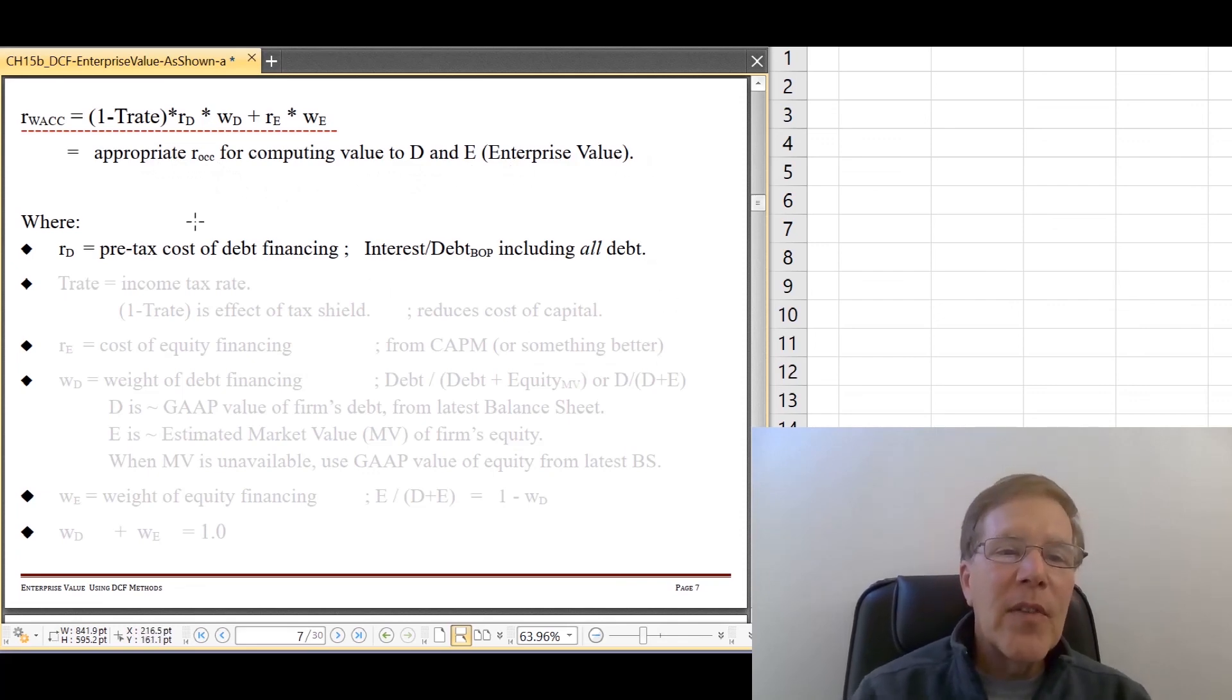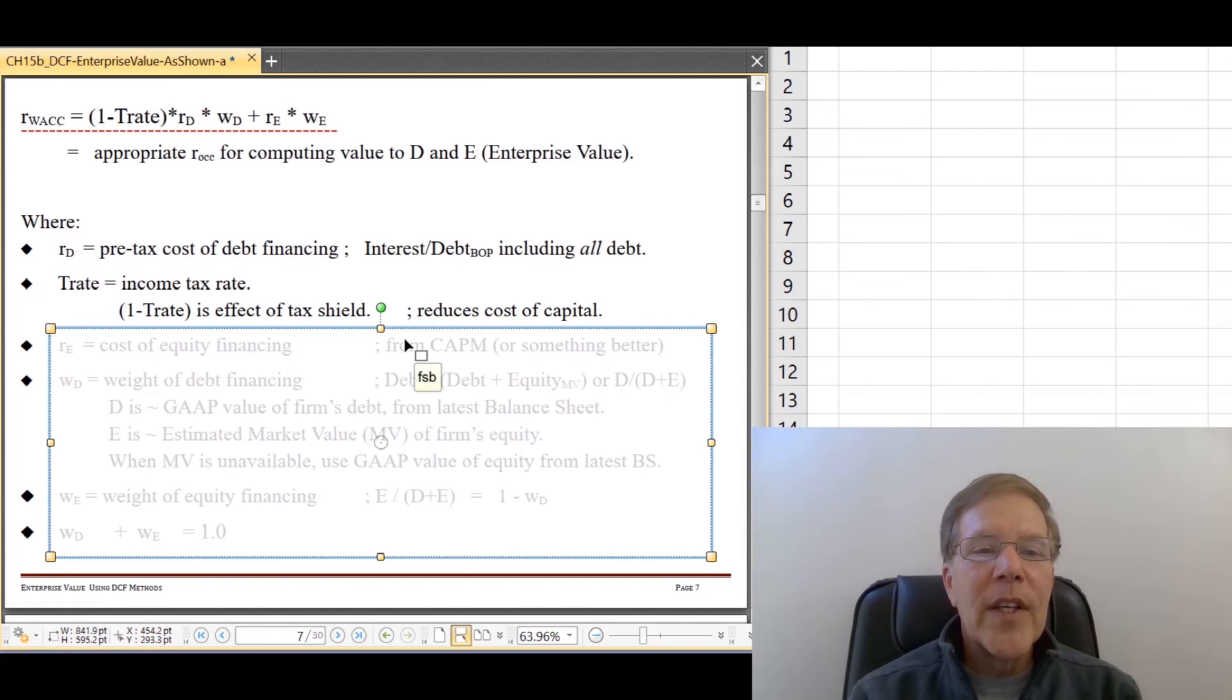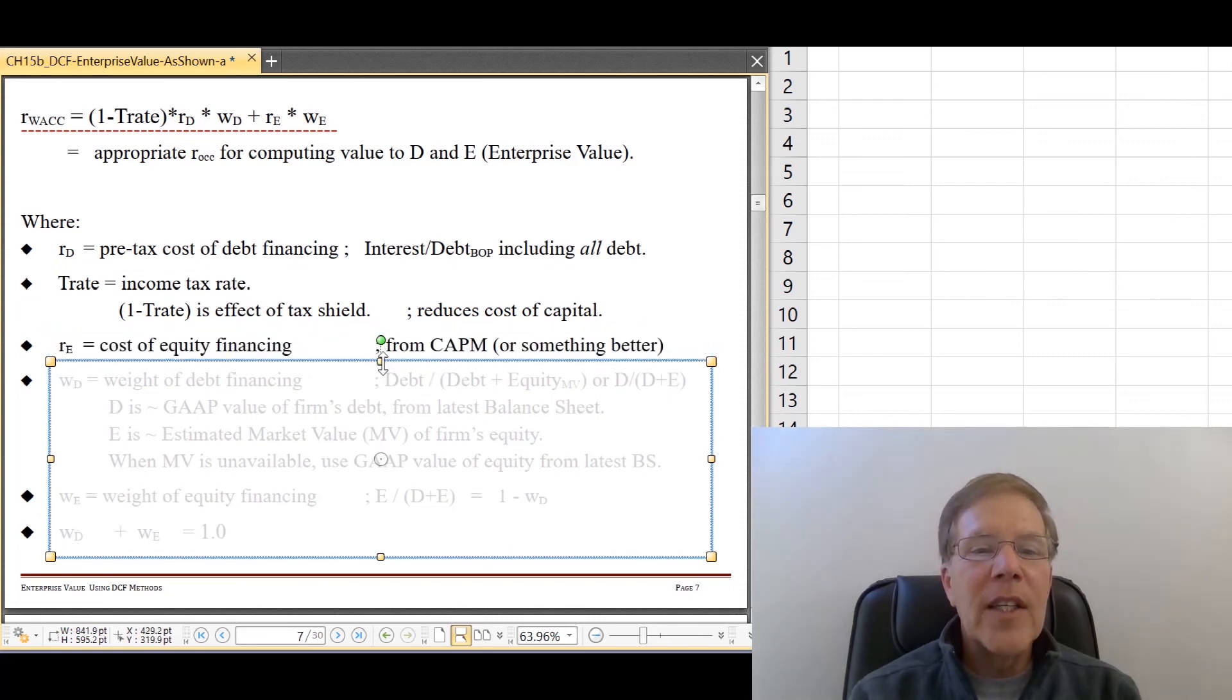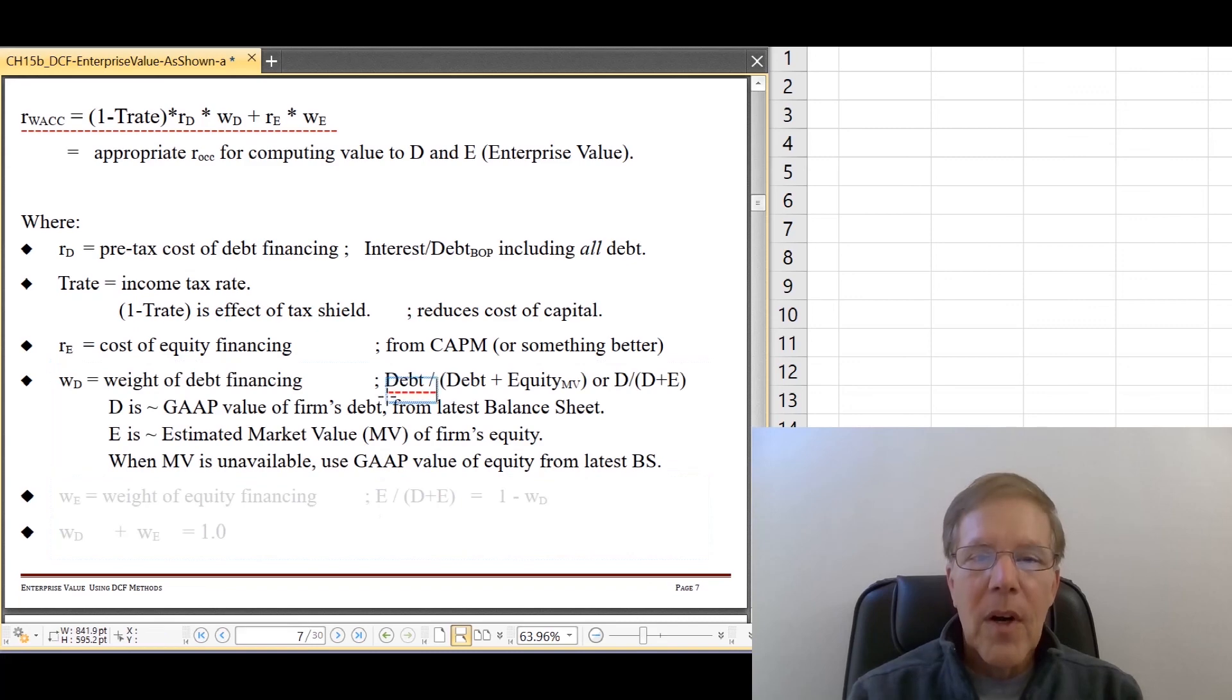And just to remind ourselves of the terms in here, so RD is that pre-tax cost of debt financing. We know what the tax rate is, and one minus the tax rate represents the effect of the tax shield. RE is, again, our cost of equity. WD is our debt over debt plus market value of equity, which is what we called our enterprise value ratio when we were doing ratio analysis. And WE is weight of equity. So that'll be E over D plus E. And that's one minus WD, which makes it true. It's true. It's true. It's really true that WD weight of debt plus weight of equity always adds up to one.